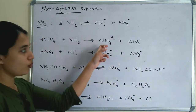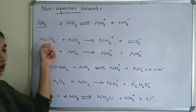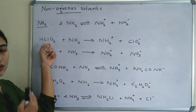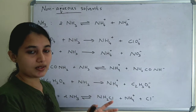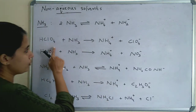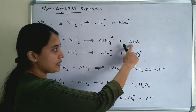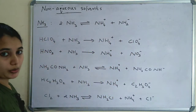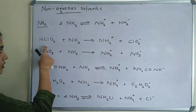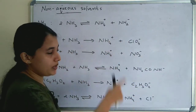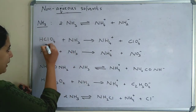Here HClO4 is donating an H⁺ to ammonia, forming NH4⁺ and ClO4⁻. When H⁺ is donated, HClO4 acts as a Lewis acid. The auto-ionization of ammonia gives NH4⁺ and NH2⁻. HClO4 is a strong acid in ammonia.